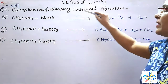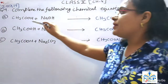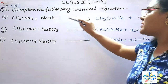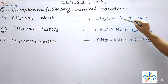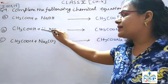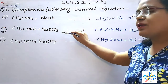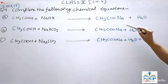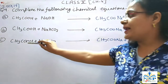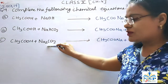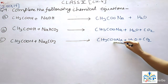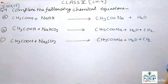Next question: Complete the following chemical equations. When ethanoic acid reacts with sodium hydroxide, it gives sodium ethanoate and water. When ethanoic acid reacts with sodium hydrogen carbonate, it gives sodium ethanoate plus water plus carbon dioxide. When ethanoic acid reacts with sodium carbonate, it gives sodium ethanoate plus water plus carbon dioxide.